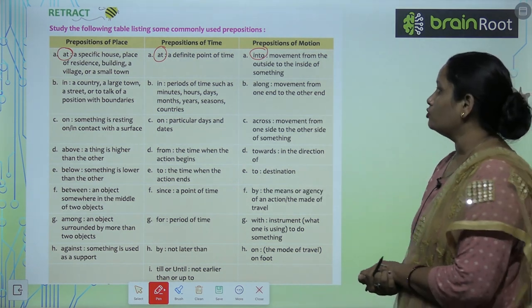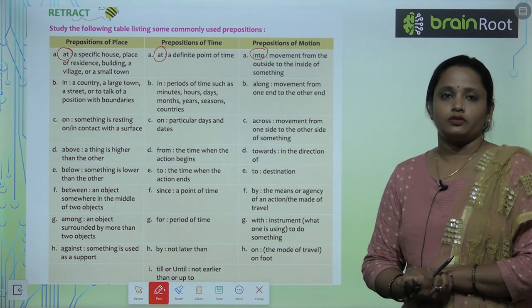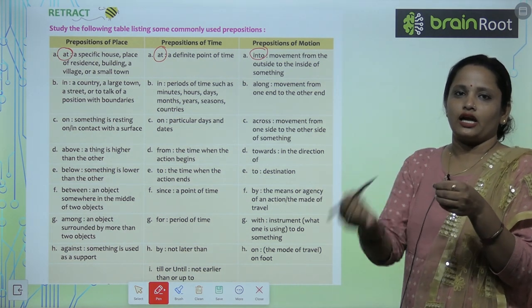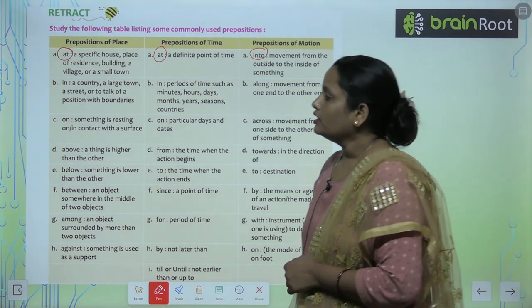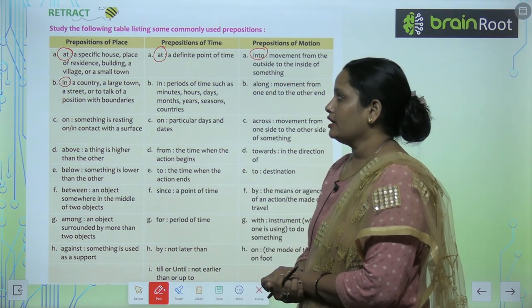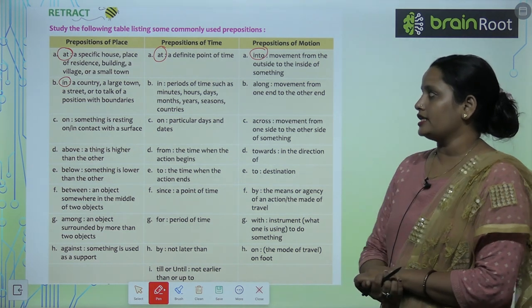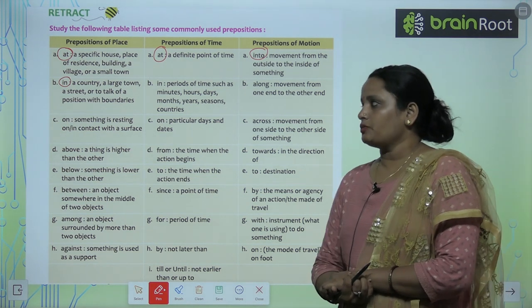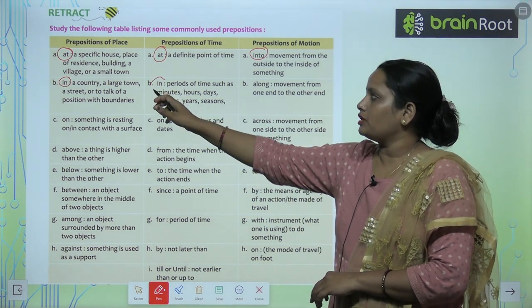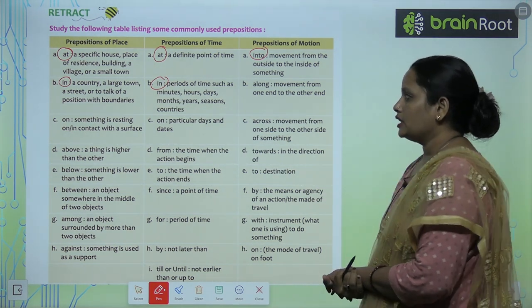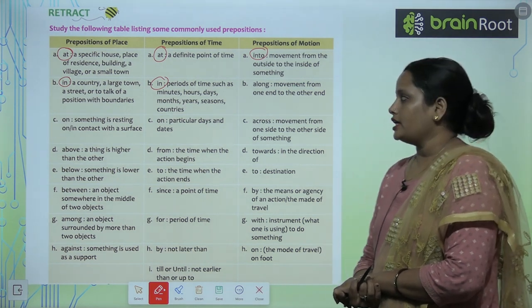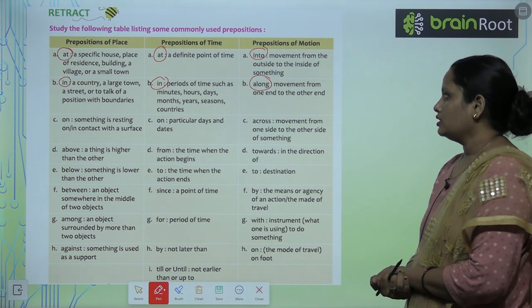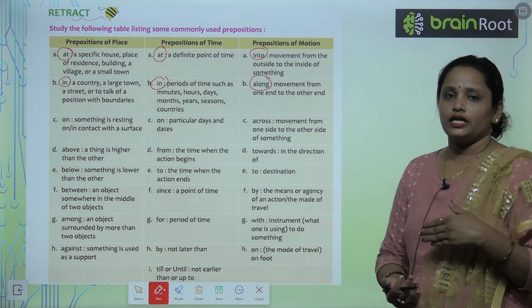'Into' indicates movement from the outside to the inside of something — for example, a pen going into a glass. 'In' is used for a country, large town, street, or a period of time such as minutes, hours, days, months, years, seasons. 'Along' indicates motion — movement from one end to the other end.